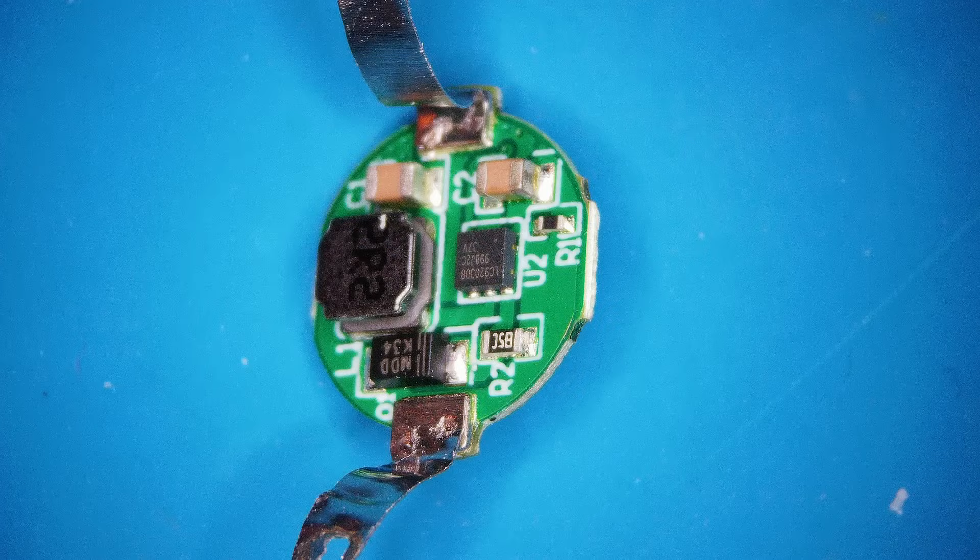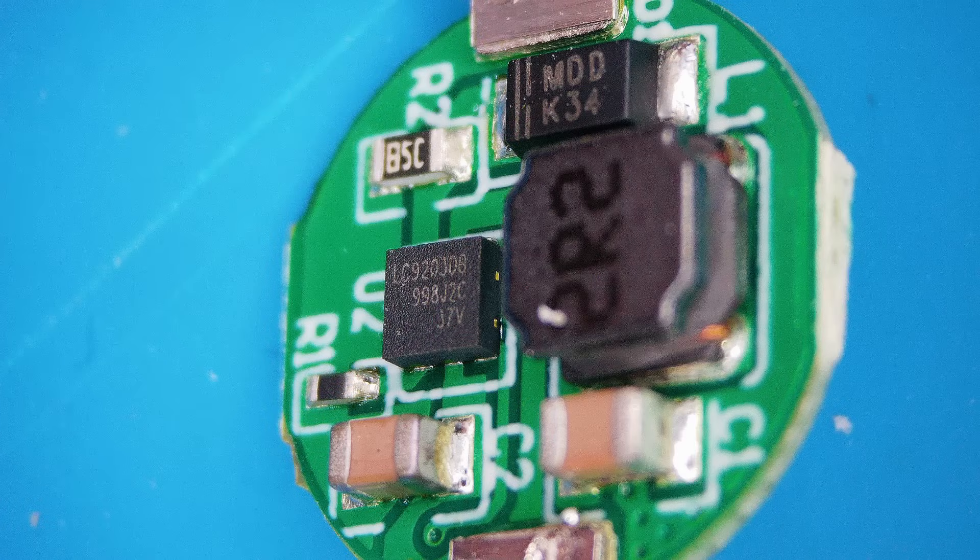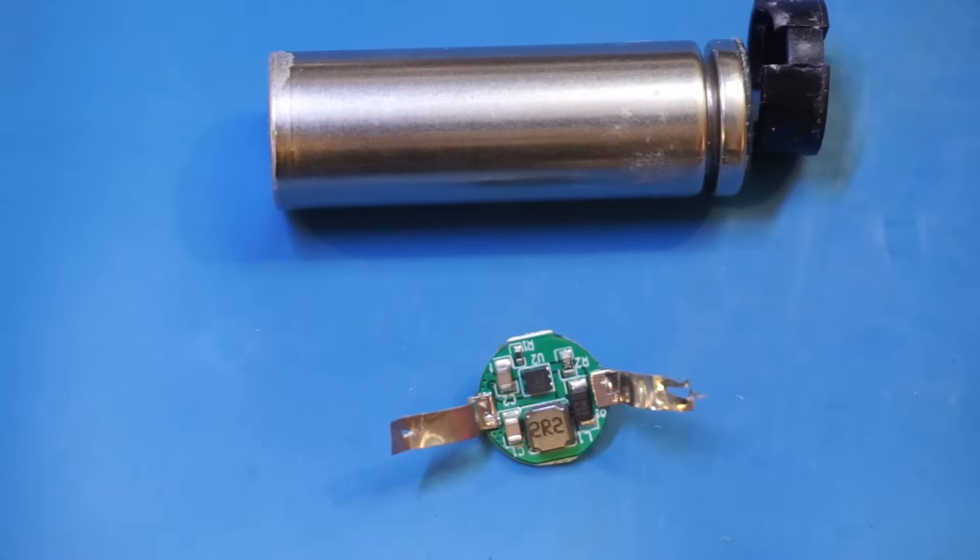The circuitry seems to be highly integrated, and everything is handled in that tiny QFN chip back there. There are markings on the chip, but I was not able to find any corresponding datasheet. Anyway, what you can see here is that we do have this Schottky diode, and now this is on the negative side of the circuitry instead of the positive, as I drew earlier. So let's actually buzz it out.